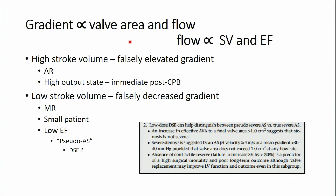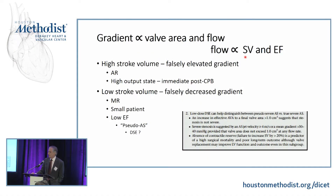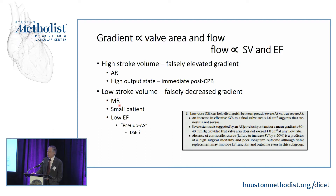Gradient is dependent on valve area and flow, and flow is dependent on stroke volume and ejection fraction. If you have a high stroke volume or high flow state — due to aortic regurgitation or a high output state — you will falsely elevate the gradient and therefore overestimate the degree of aortic stenosis. Similarly, in a low stroke volume state, whether from a very small patient, mitral regurgitation, or a low ejection fraction, you will underestimate the gradient and therefore underestimate the degree of aortic stenosis.